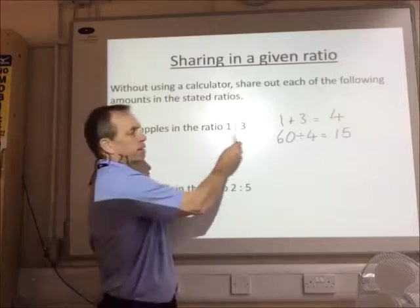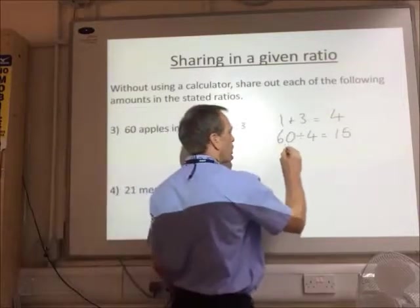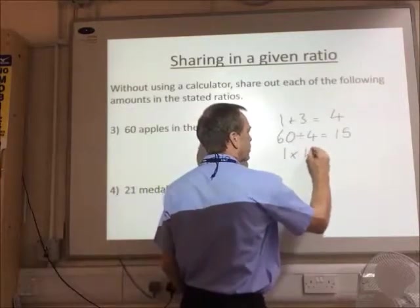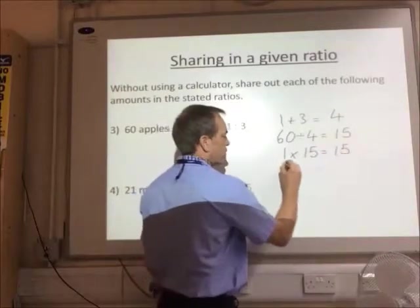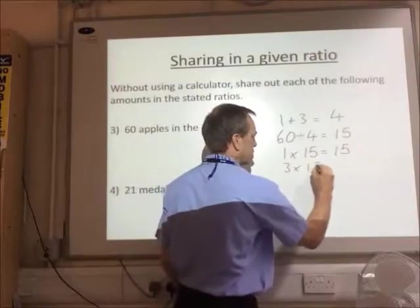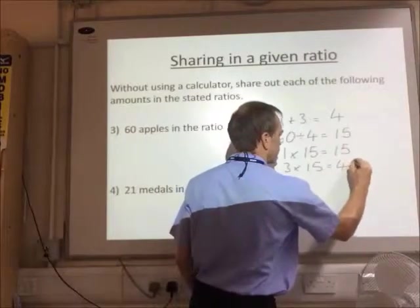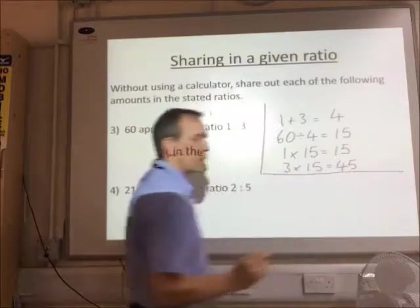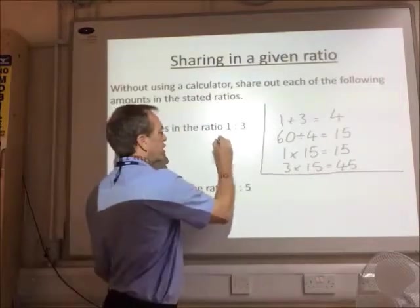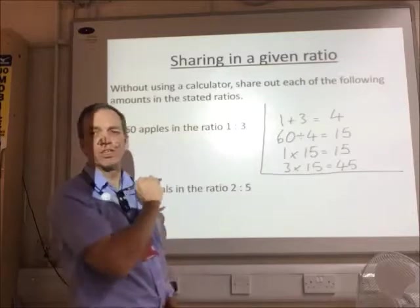And now I'm going to multiply. So each of those numbers, 1 times 15 is 15, 3 times 15. So that's my calculation there.